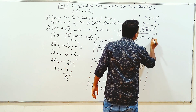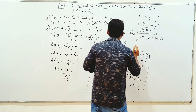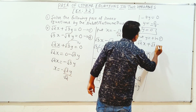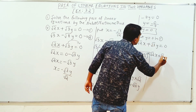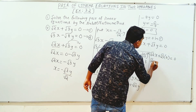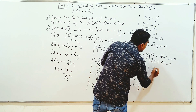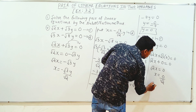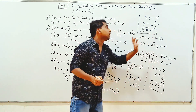Put y equal to 0. Use either equation 1 or 2 — I have equation 1: root 2x plus root 3y equal to 0. Substituting y equal to 0: root 2x plus root 3 into 0 equals 0. So root 2x equal to 0, and x equal to 0. We get x value is 0 and y value is 0.